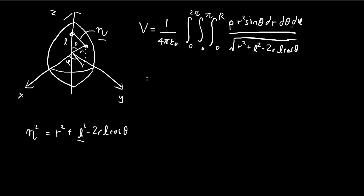First step: let's get rid of the phi terms, because there are no phi terms inside, so we can just multiply by 2pi. This cancels with the 4pi, giving us 2 epsilon. I'm going to pull the density constant out, so we're left with this expression.